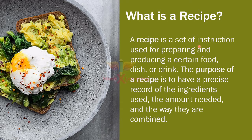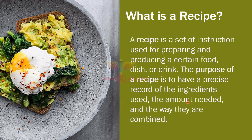So a recipe is a set of instructions given to prepare a certain food dish. The purpose of a recipe is to have a precise record of the ingredients — remember, ingredients means the substances or food items used to prepare a dish — the amount of the ingredients, and the way they are combined.